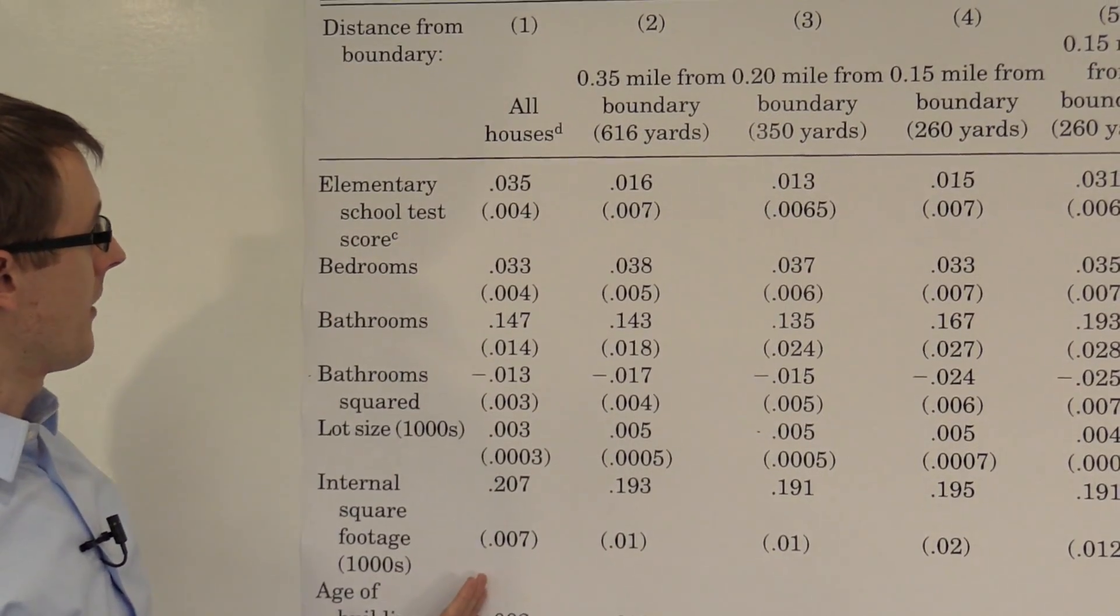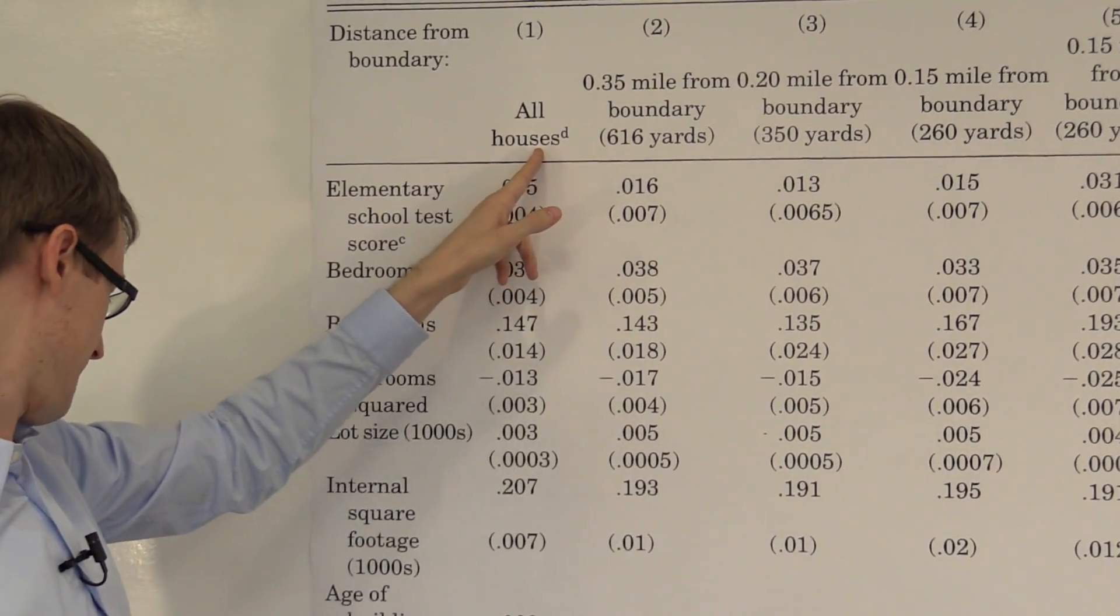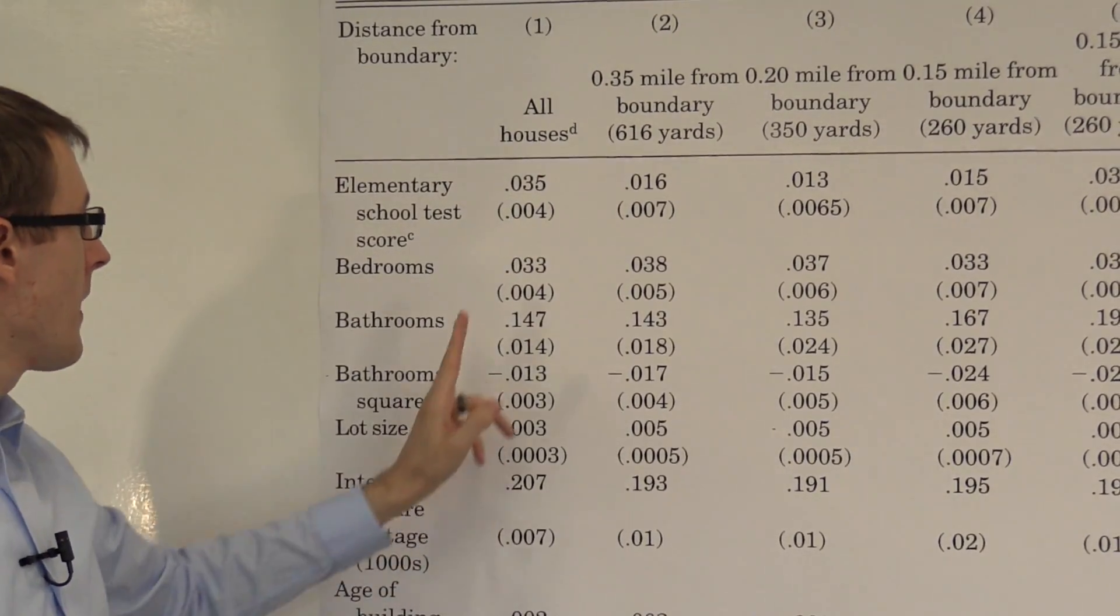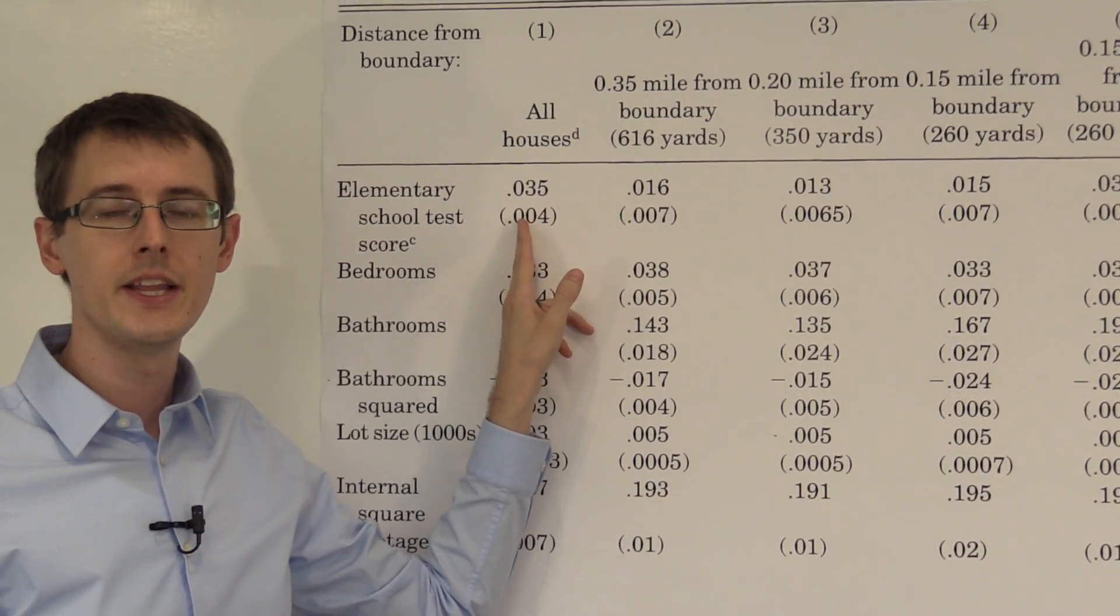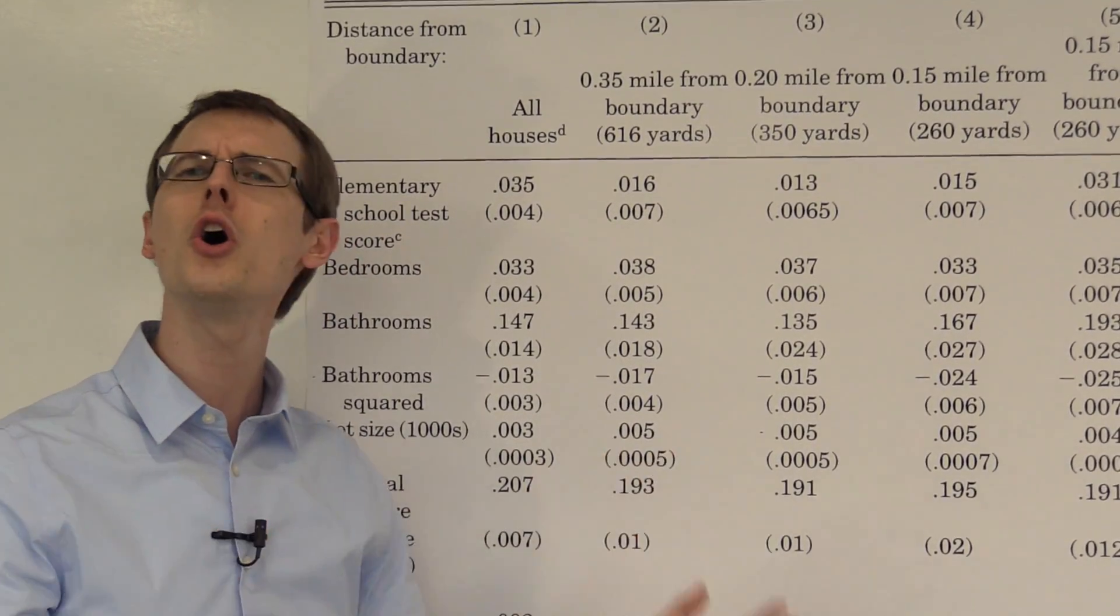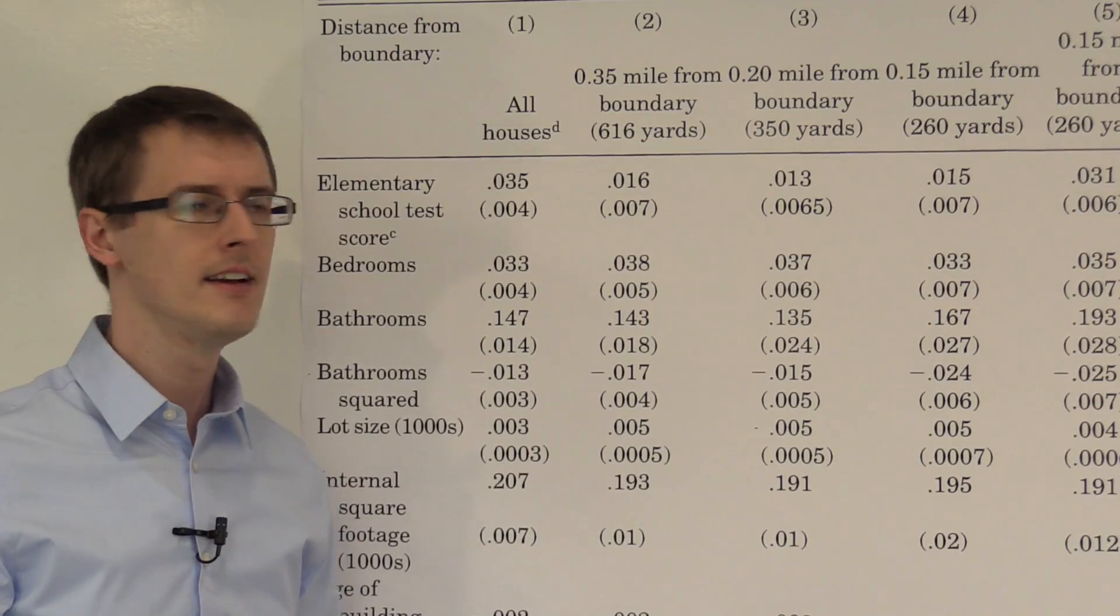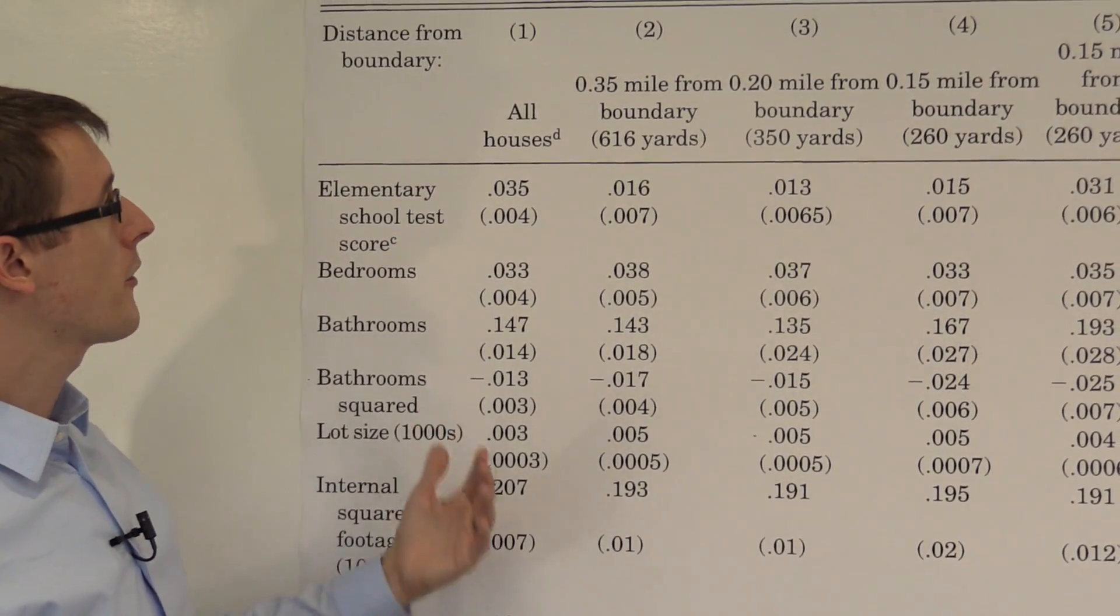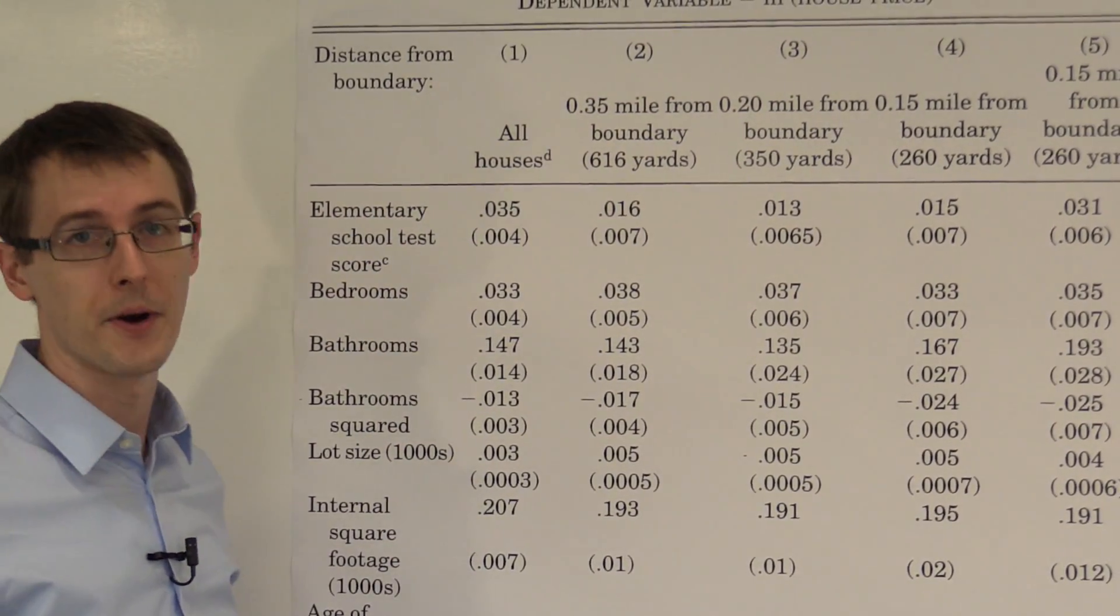Okay, so this first column here says all houses. So this is a regression that doesn't use any of this regression discontinuity idea. It just takes all the houses in the data set and does a regression of house price on all of these variables.